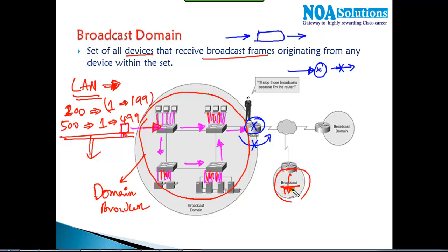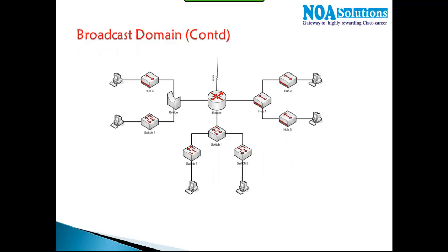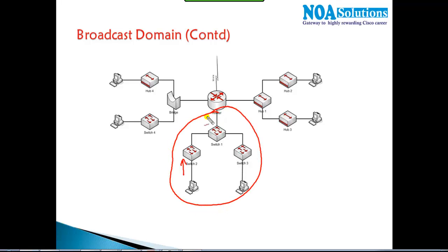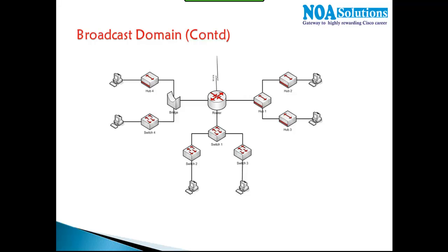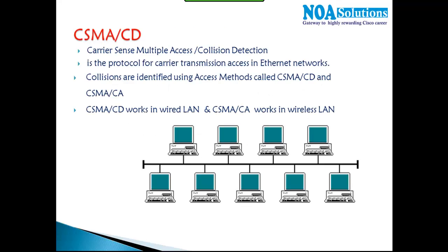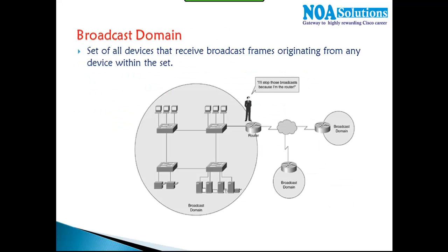Every LAN segment is one broadcast domain. If we try to figure out how many broadcast domains exist in a diagram: if any one device generates a broadcast, that is one broadcast domain. If there are three separate LANs separated by routers, we have three broadcast domains, because routers don't propagate broadcasts to other LANs. This type of question can be expected in your examinations, where you'll be given a set of diagrams and asked how many broadcast domains and collision domains exist.